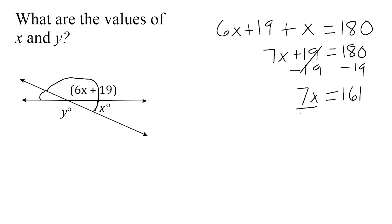And now what we have to do is divide both sides by 7. And 161 divided by 7 is 23. So we already figured out that x is equal to 23 degrees.